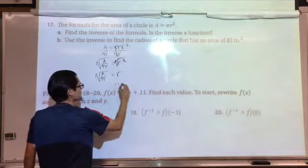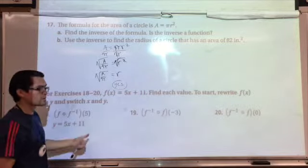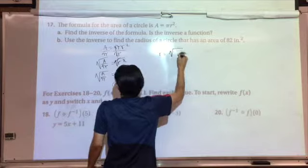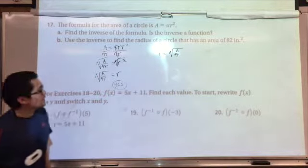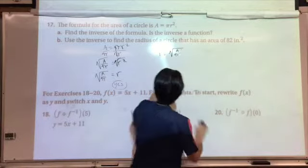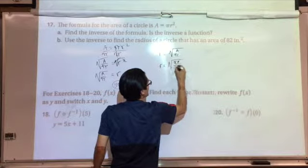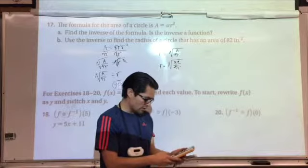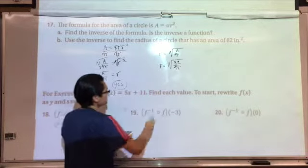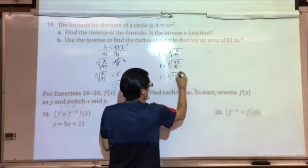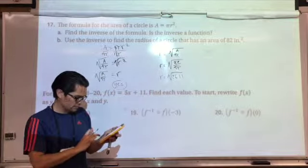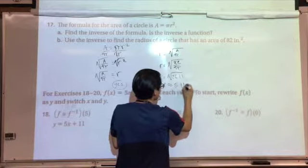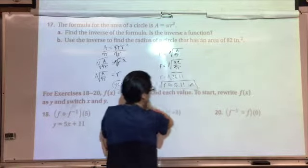Use the inverse to find the radius of a circle with an area of 82 square inches. Plug in 82: r equals the square root of 82 over pi. Dividing 82 by approximately 3.14 gives 26.11. Taking the square root of 26.11 gives approximately 5.1 inches. So r is approximately 5.1 inches.